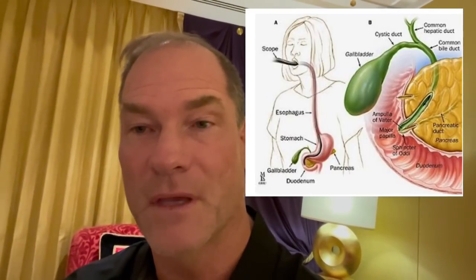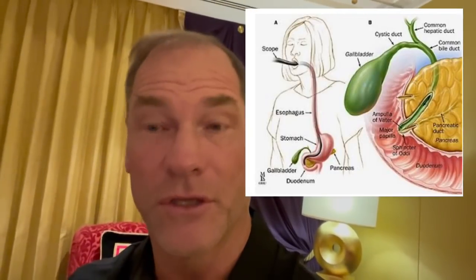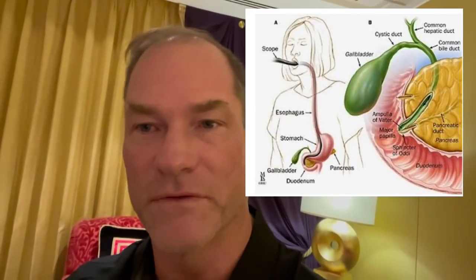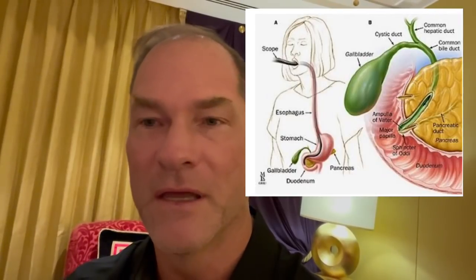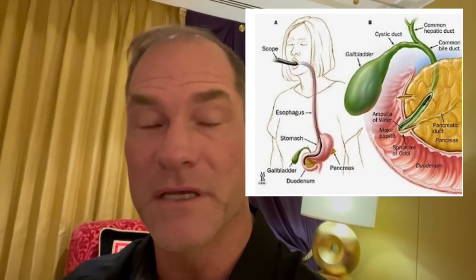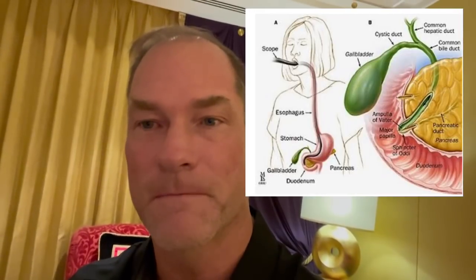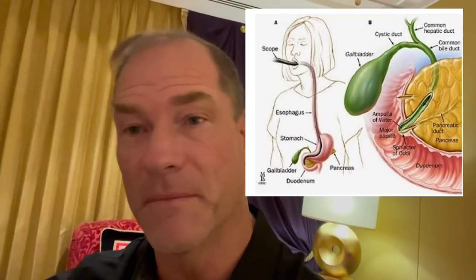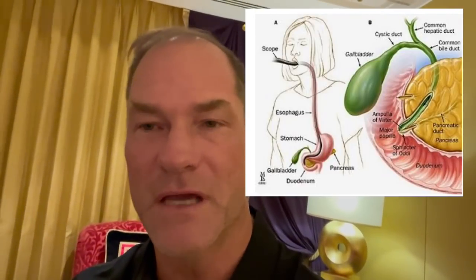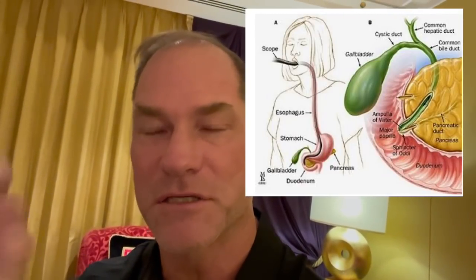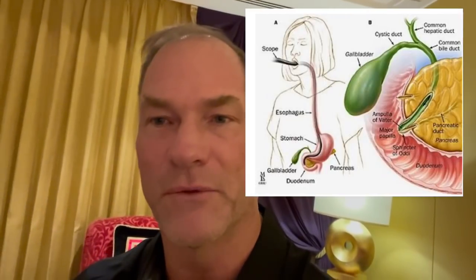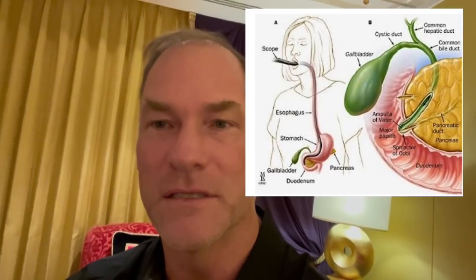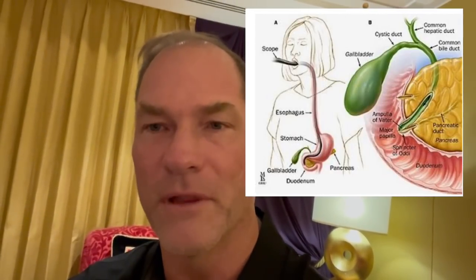When you don't have a gallbladder, bile still accumulates and is stored in the common bile duct behind the sphincter of Oddi. The same thing happens — when the upper intestine senses fat that you've ingested, the sphincter opens and bile enters. Over time, the common bile duct actually expands and acts almost like a mini reservoir, similar to what the gallbladder does. So you can certainly continue to eat fat in the absence of a gallbladder.